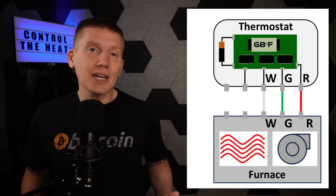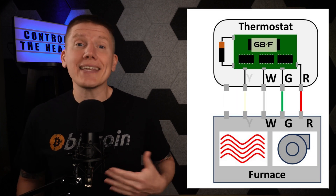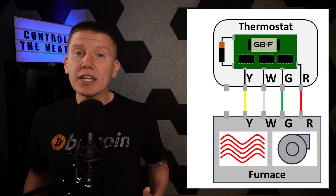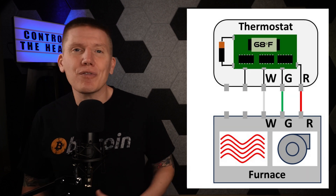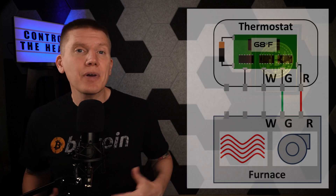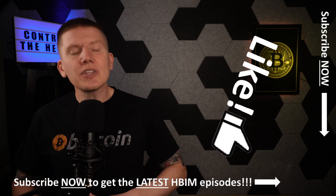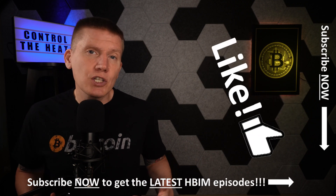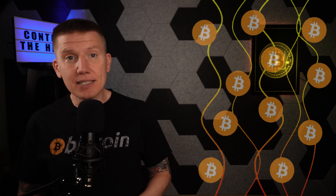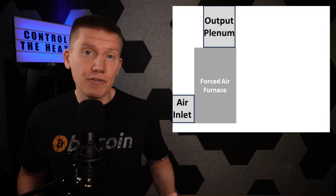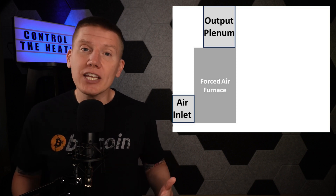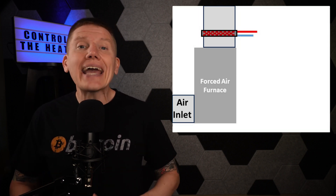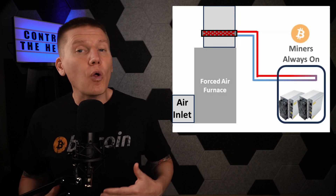There's one more wire in typical setups, and that is the Y or yellow wire, used for air conditioning — I'm not going to cover that here. Also, if you are running a heat pump there are going to be other wires, but I'm not going to cover these either. With the basic wiring covered, adding Bitcoin heat is pretty straightforward. I'll start with the simplest Bitcoin heating system: a forced air furnace with a water-to-air heat exchanger in the output plenum of the furnace and a system with the miners running all the time.